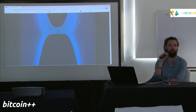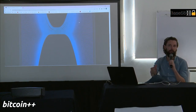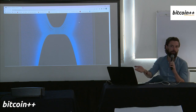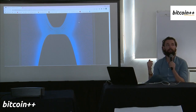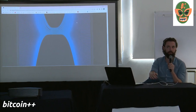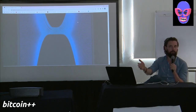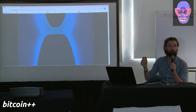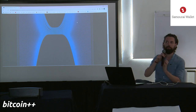That full node provider cannot create fake blocks because creating a block requires proof of work. But they can lie by omitting certain information from the block filter, tricking you into never downloading the block in the first place. So with block filters you trust someone else's node to verify the entire chain, and they can lie by omission.